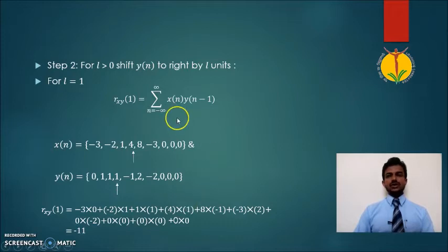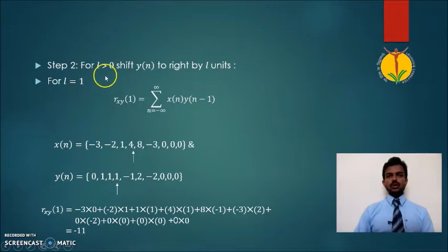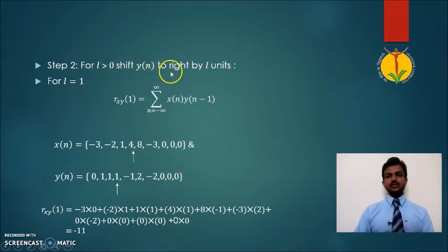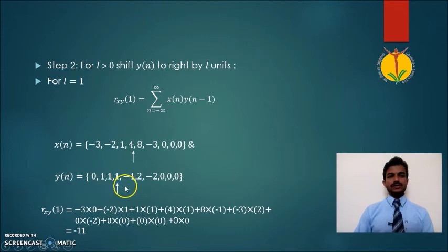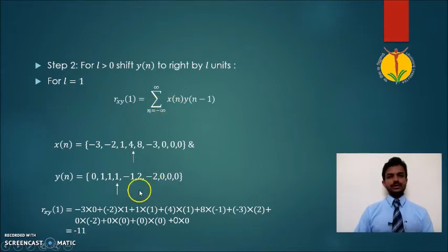For the next substitution, one important point to note: when L is greater than zero, the signal Y(N) is shifted to the right side by L units. Here we substitute L equals one, so the equation reduces accordingly and Y(N) is shifted to the right by one sample. Following the same procedure of multiplication and addition, we get the second point R of XY.